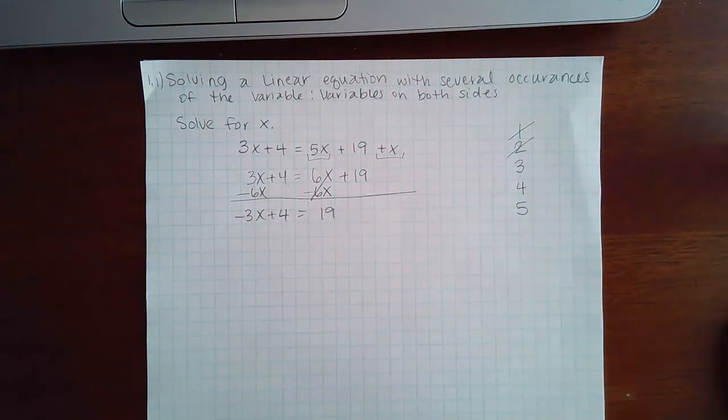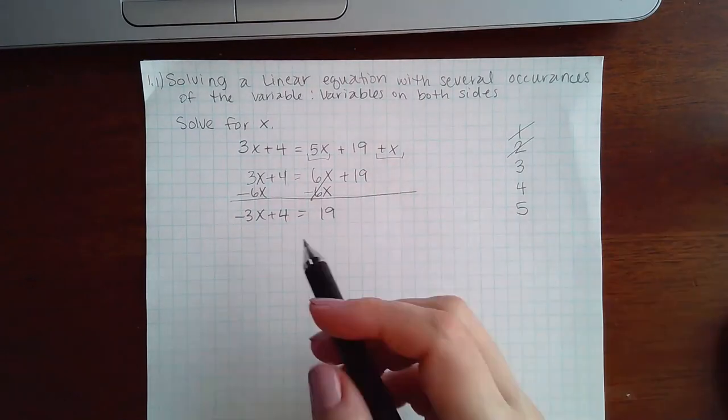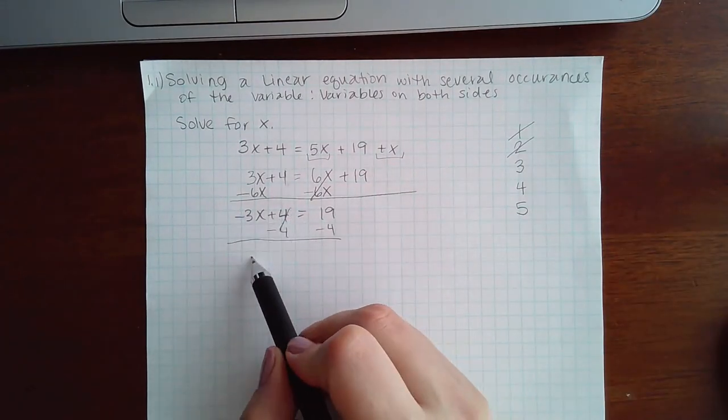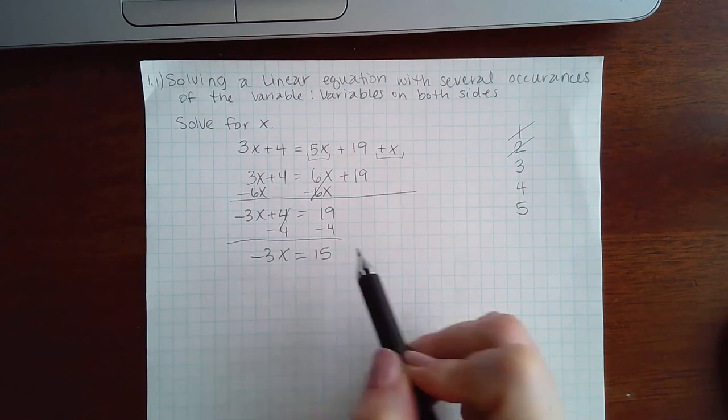Step five is to move the constants to the other side. So this four has got to move using the opposite sign. I get 15 now.